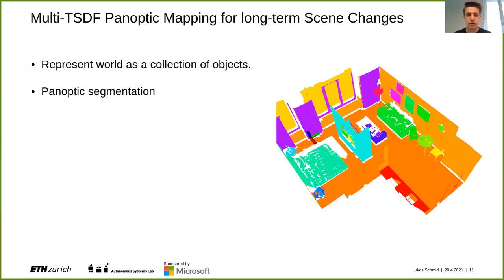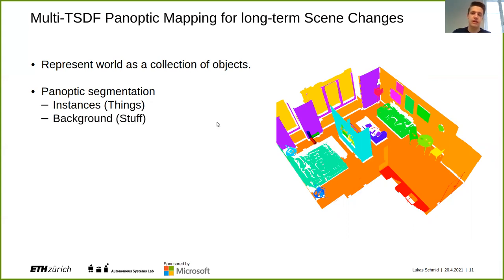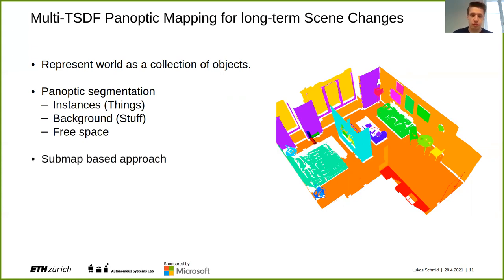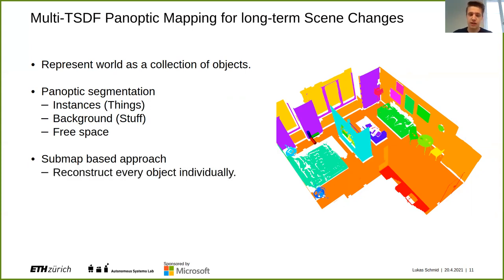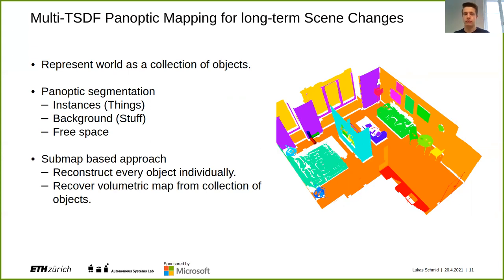For the question of what constitutes objects, we go to the domain of panoptic segmentation. With panoptic segmentation, we differentiate between instances — things in our environment such as two chairs — but we also care about the background, such as floors or walls, to get the full representation. We also incorporate free space as a third layer to recover the fully volumetric map. In terms of approach, we employ a sub-map-based approach that has worked well for spatial consistency with volumetric maps, where the idea is that we reconstruct each and every object individually in its own sub-map, and from this collection of objects recover full volumetric information.